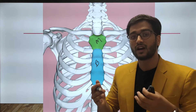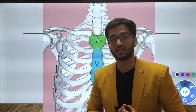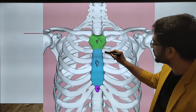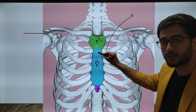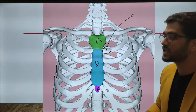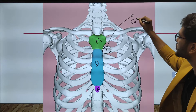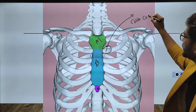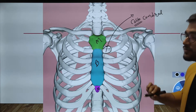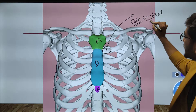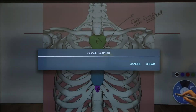Ribs join anteriorly with the sternum and posteriorly with the vertebra. The junction between the ribs and the body of the sternum is composed of a cartilaginous joint known as the costochondral junction, where 'costo' refers to the rib and 'chondral' refers to cartilage.